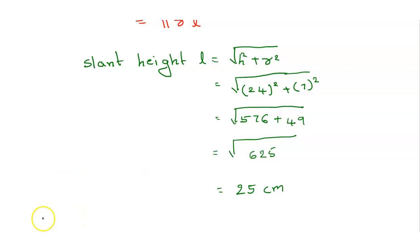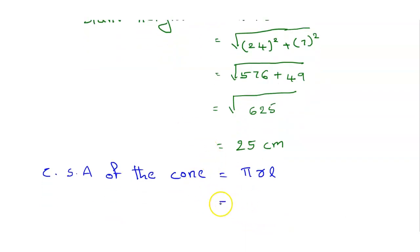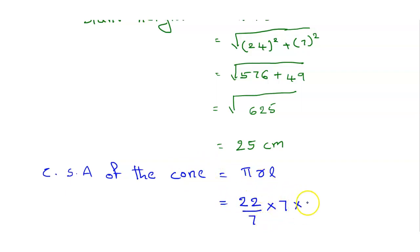Now the curved surface area of the cone. The formula is π r l. Pi is 22 by 7, r is 7 from the question, and l is 25. The 7 in the denominator and the r value 7 cancel out.